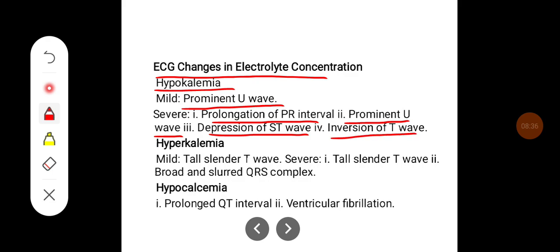In hyperkalemia, mild hyperkalemia produces tall slender T wave. Severe hyperkalemia shows tall slender T wave and broad and slurred QRS complexes. In hypocalcemia there will be prolonged QT interval and sometimes it may lead to ventricular fibrillation.